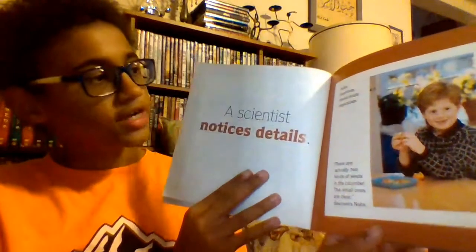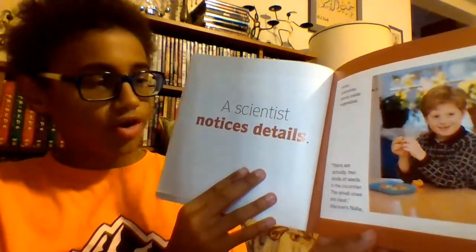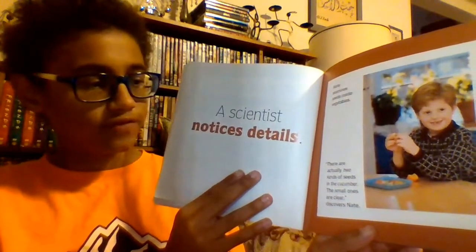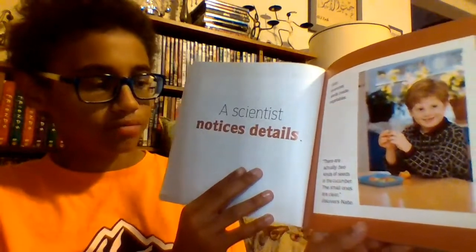A scientist notices details. Nate examines seeds inside vegetables. 'There are actually two kinds of seeds in the cucumber. The small ones are clear,' discovers Nate.